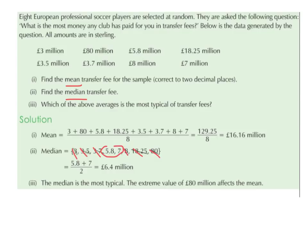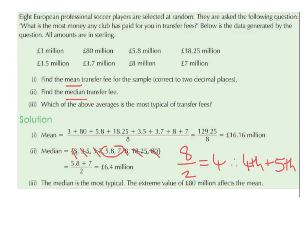For a larger list of numbers, we use a formula. We have eight values, and since that's an even number, we divide by 2: 8 divided by 2 is 4. So we take the fourth and fifth values. Going along the ordered list: 3 is first, 3.5 is second, 3.7 is third, 5.8 is fourth, and 7 is fifth. We add the fourth and fifth values together and divide by 2 to get the same answer. If we had 9 numbers instead, we'd add 1 then divide by 2: 9 plus 1 is 10, half of 10 is 5, and the fifth value would be the median.